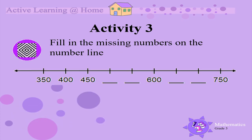Activity 3: Look at the number line and fill in the missing numbers. Think about how you get from one number to the next. Can you see that you must add 50?